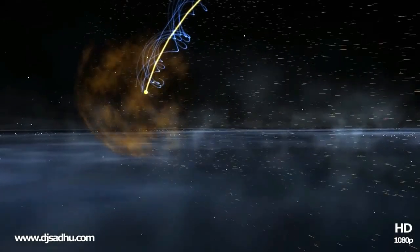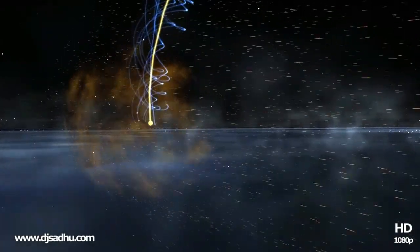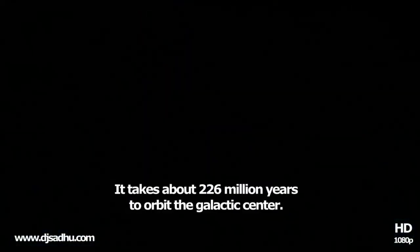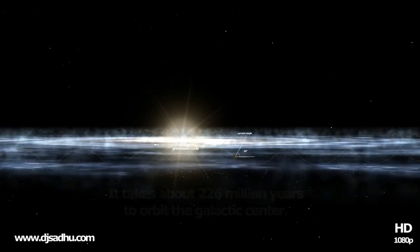However, with all this tremendous speed, the sun completes one cycle around the orbit every 226 million years.